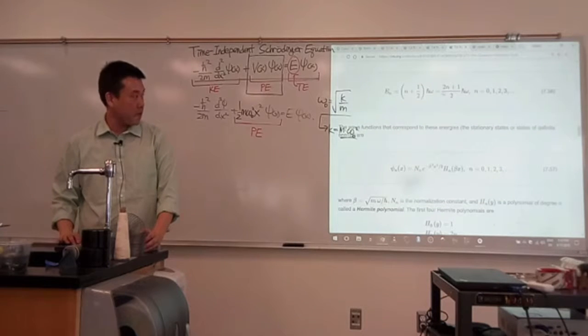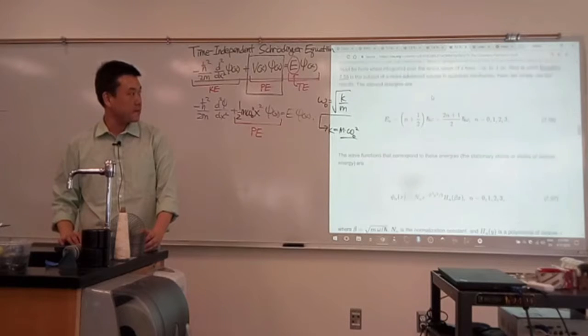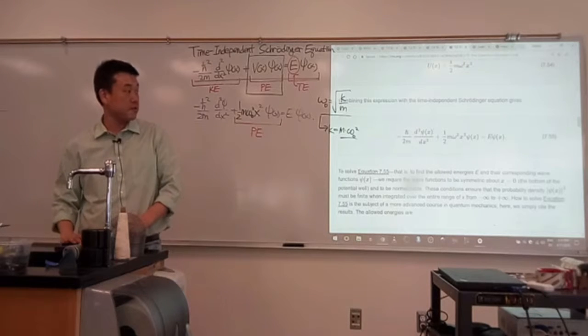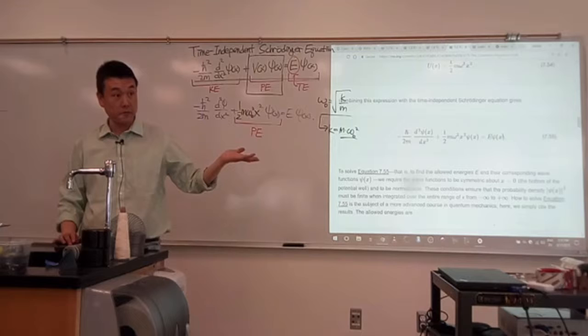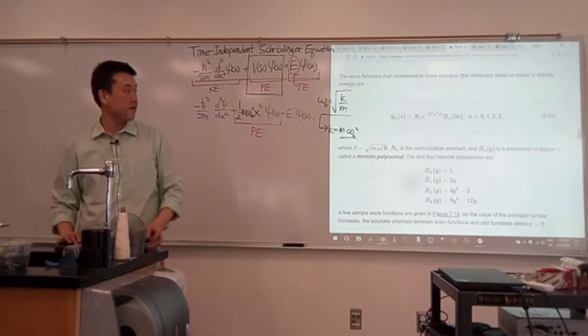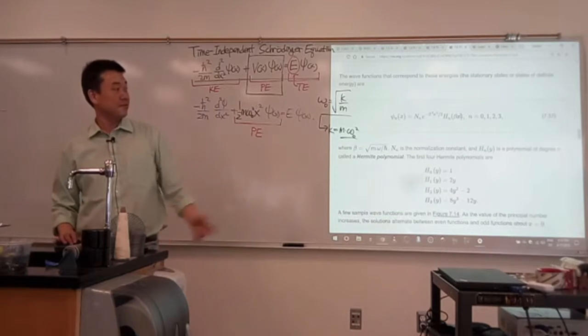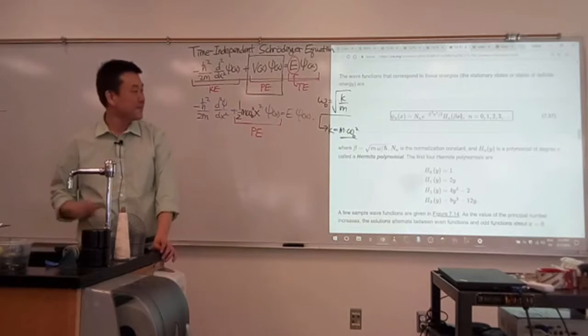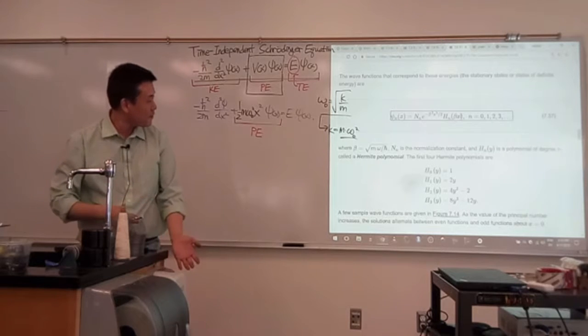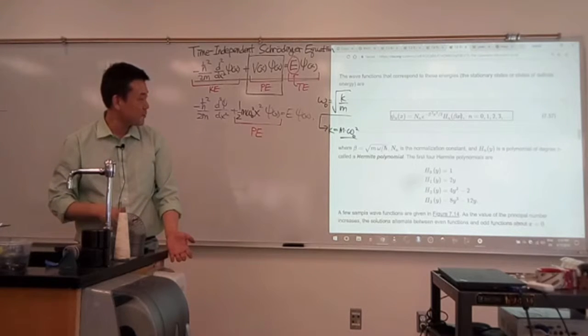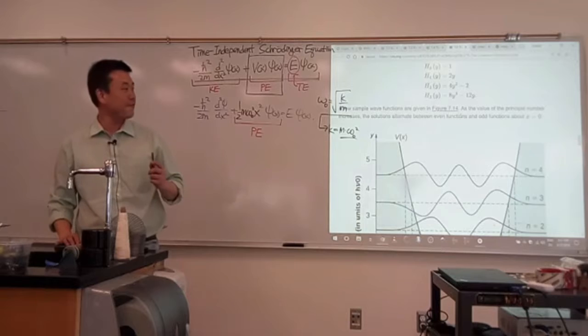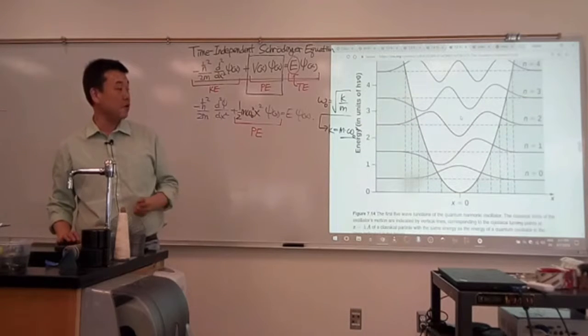You can plug this energy back into here, and we'll actually do that shortly, and then find what functions satisfy the resulting differential equation. For different values of N, you get different forms of solution that looks like this. This is the Gaussian thing. This is the Hermite polynomial. You will never have to memorize this, but you should have a sense of what they look like.